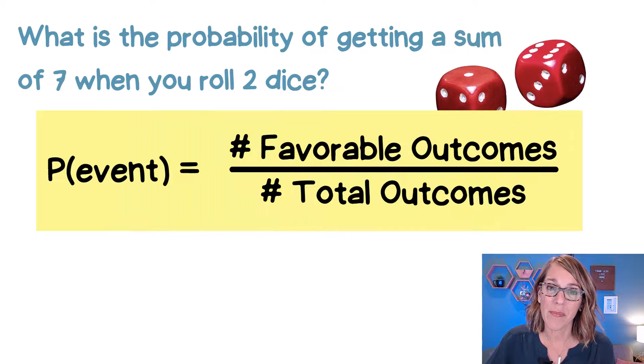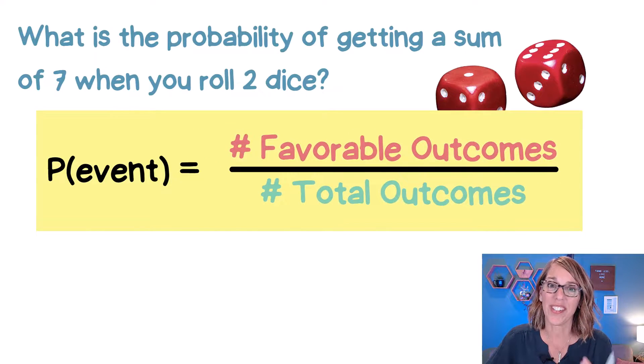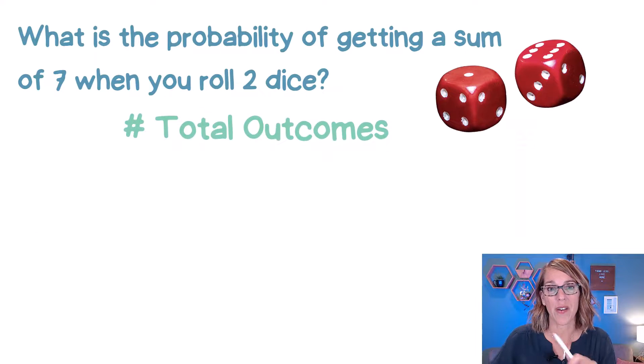We're going to need that probability formula that says the probability of any event is equal to the number of favorable outcomes divided by the total number of outcomes. I want to focus on the total number of outcomes first.